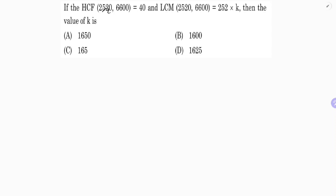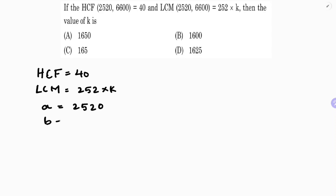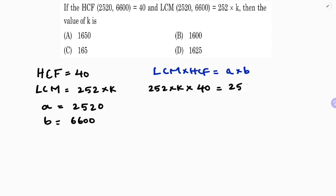If the HCF of 2520 and 6600 is 40, and the LCM of 2520 and 6600 is 252 times k, then one number is 2520 and the other number is 6600. The formula is: LCM times HCF equals the product of two numbers. So LCM is 252k, HCF is 40, and the product is 2520 times 6600.